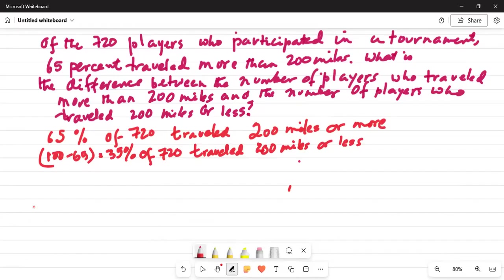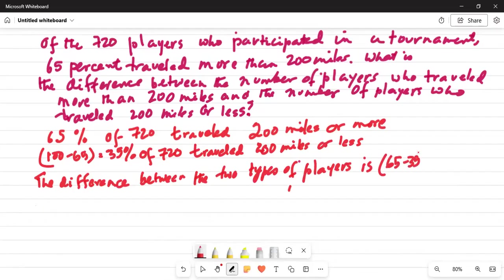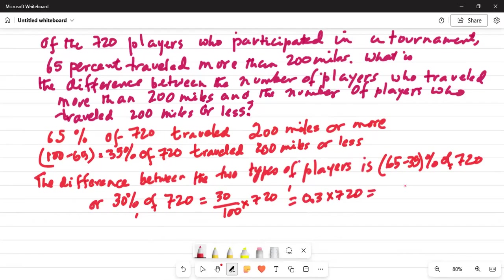So, what is the difference between them? The difference between the two types of players is 65 minus 35% of 720, or 30% of 720. In other words, it is 30 divided by 100 times 720, which is 0.3 multiplied by 720. So, the answer is 3 times 2 is 6 and 3 times 7 is 21. The answer is 216 players.